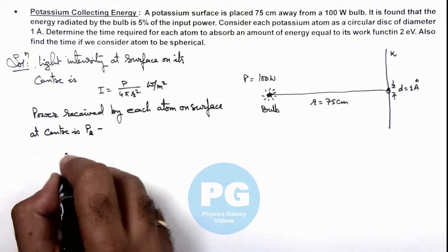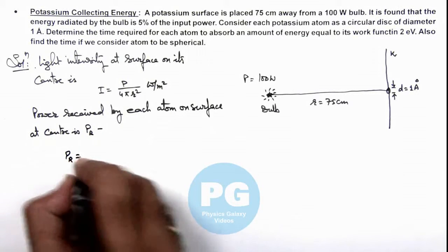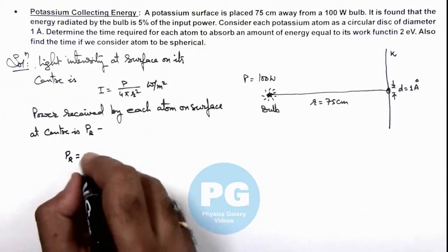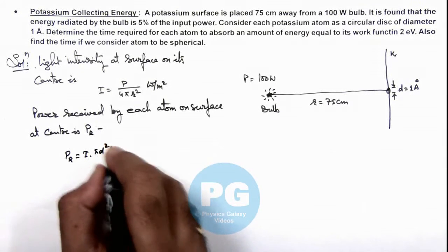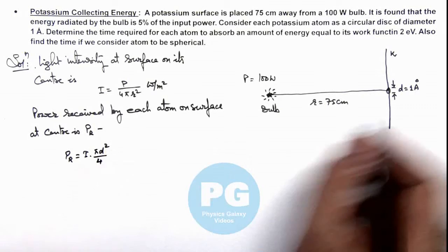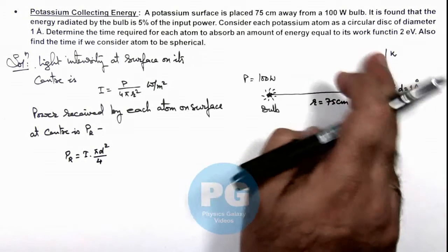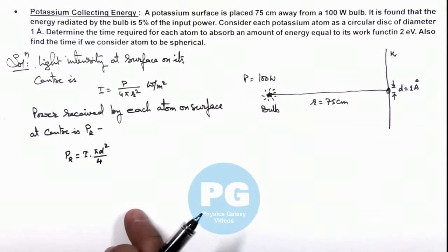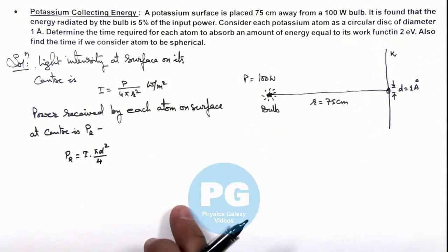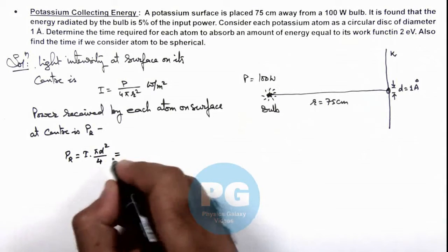The value of this received power equals the intensity multiplied by πd²/4, where d is the diameter of the disc, assuming the potassium atom as a circular disc. So in this situation we can easily calculate this.